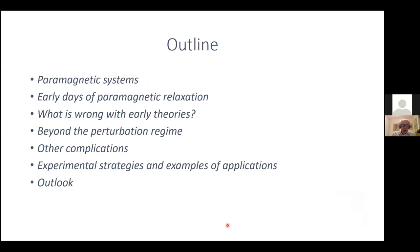I will begin by defining paramagnetic systems and giving you some examples. I'm going to go through the early days of paramagnetic relaxation and early work. I'm going to discuss what is wrong with the early theories, why we need something better, and in particular discuss what happens when we are beyond what is called the perturbation regime.